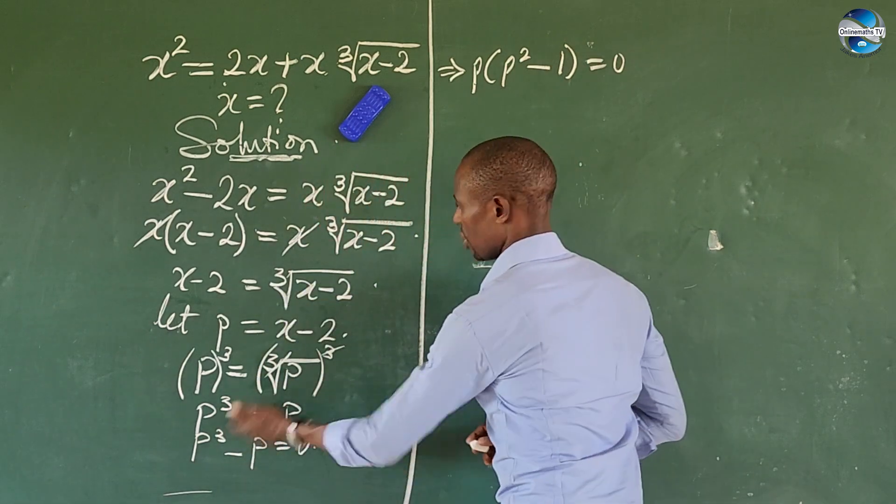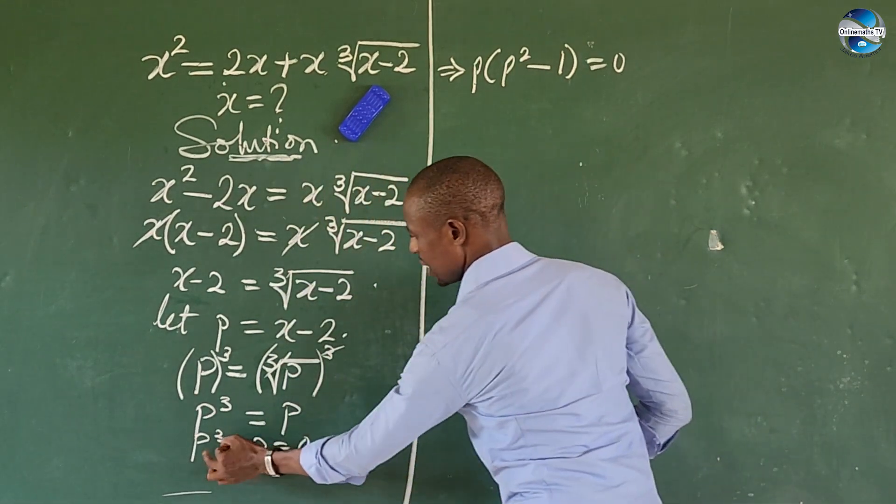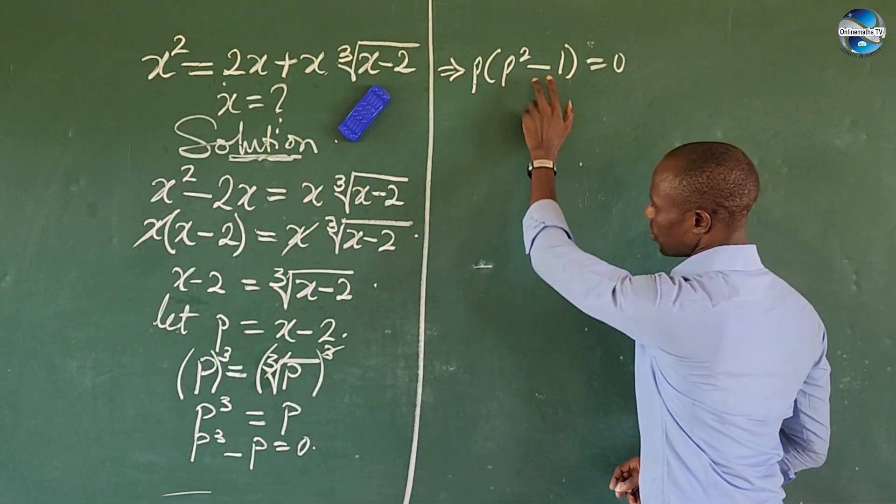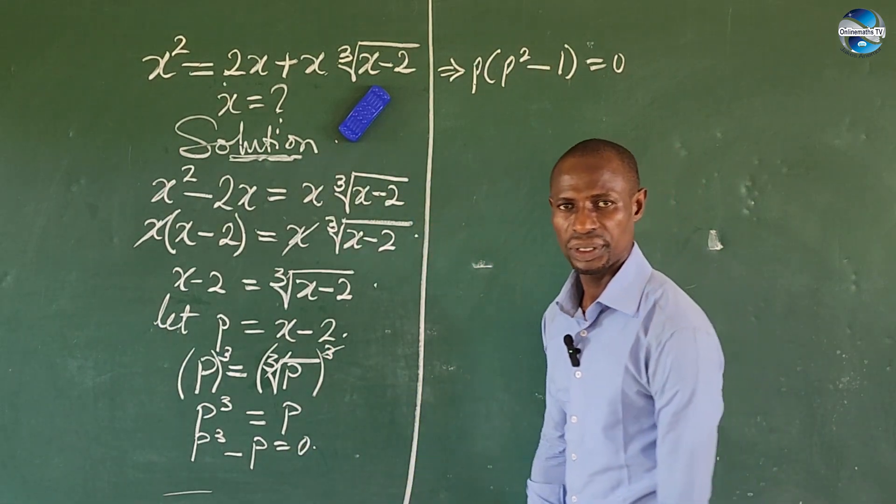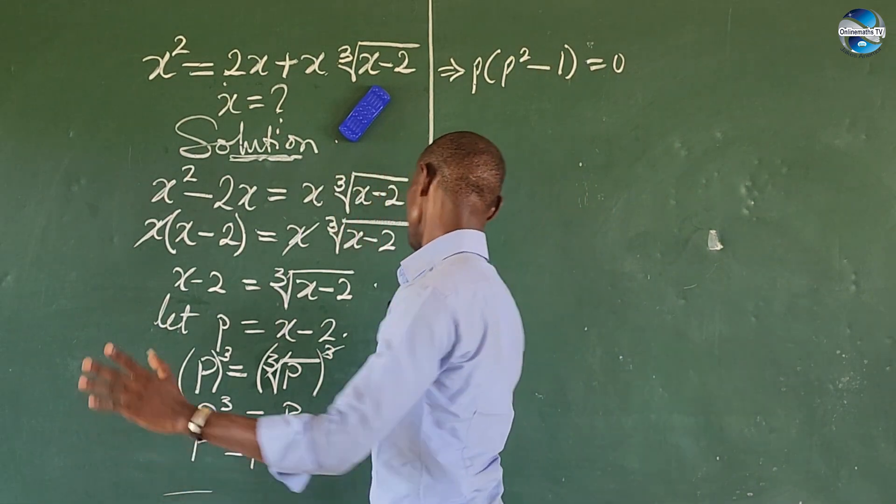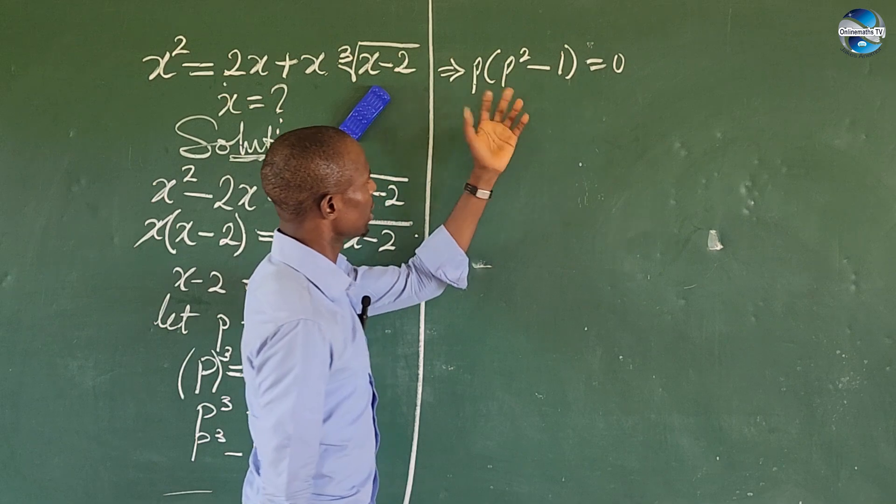Now let's go again. If you look at this, we apply what is called the zero product rule, whereby we equate this to zero, equate this to zero.